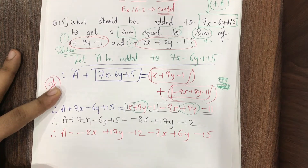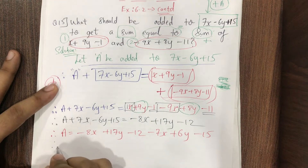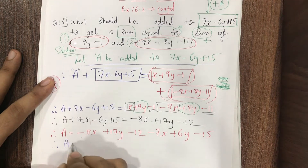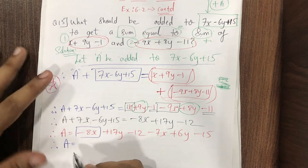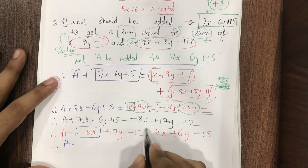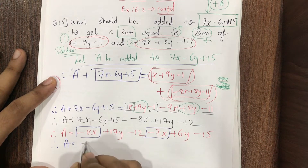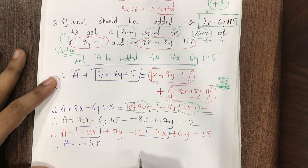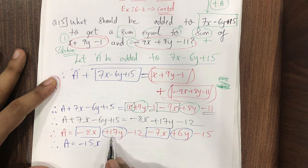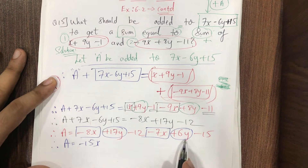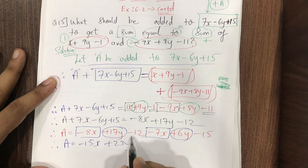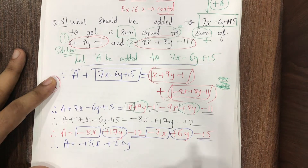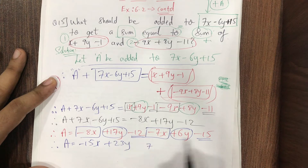Therefore, capital A equals: combining x-terms: minus 8x minus 7x gives minus 15x; combining y-terms: plus 17y and minus 6y gives plus 23y — wait, let me recheck: minus 6y stays, so 17y minus 6y gives plus 11y; combining constants: minus 12 minus 15 gives minus 27. So A equals minus 15x plus 11y minus 27.